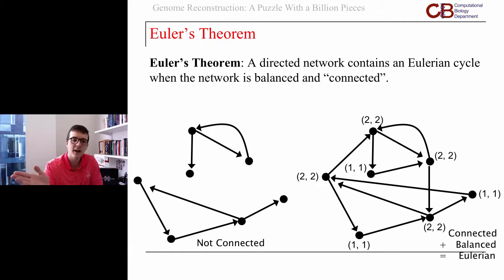We can't possibly get every edge if the network is in multiple different pieces. The network on the left there is not connected. There's no way we could use every possible edge in that network without jumping across, and that's not allowed. Euler's theorem states that as long as the network is connected and balanced, we'll be able to find an Eulerian cycle in that network.